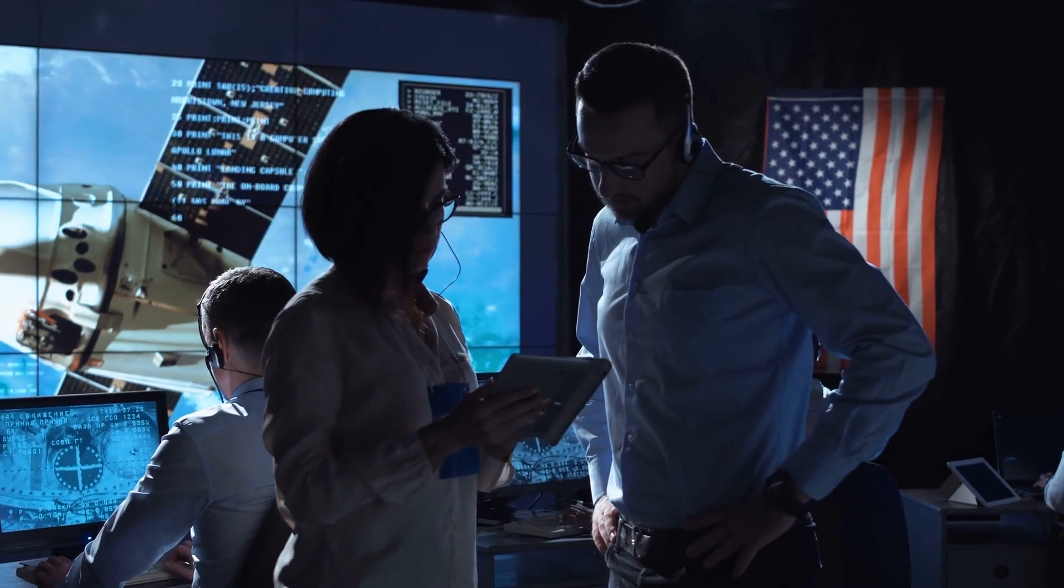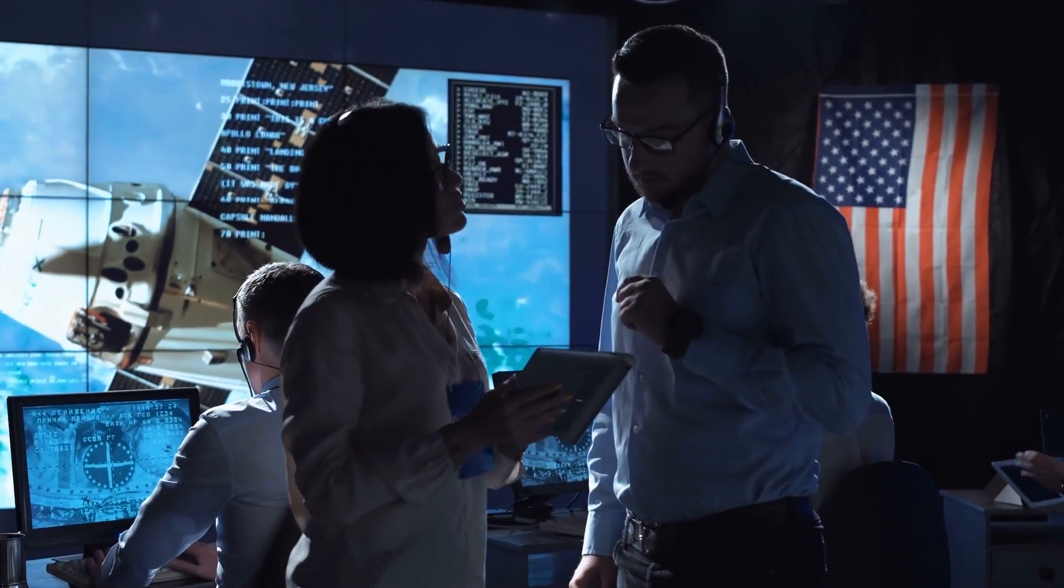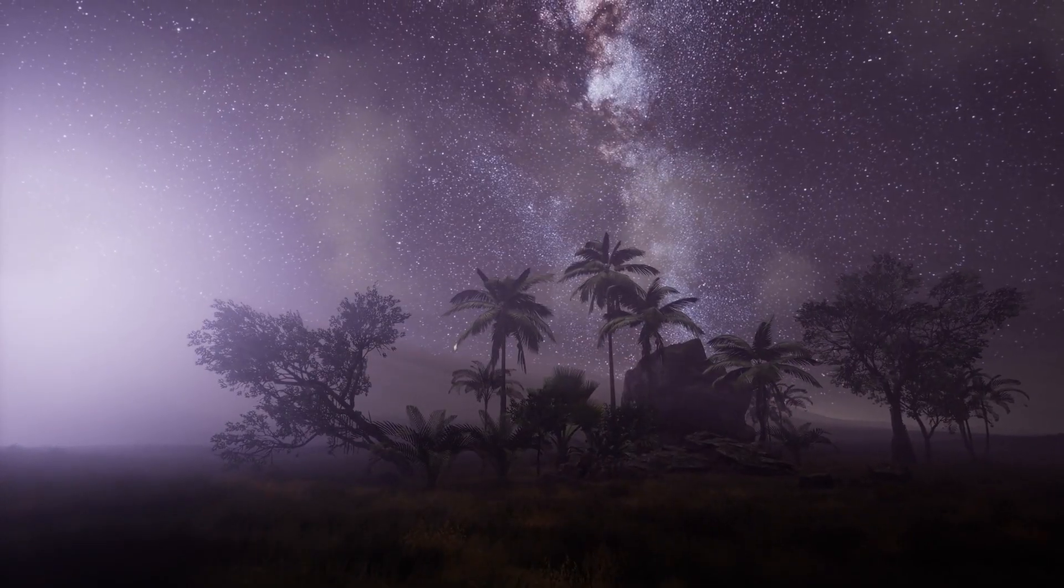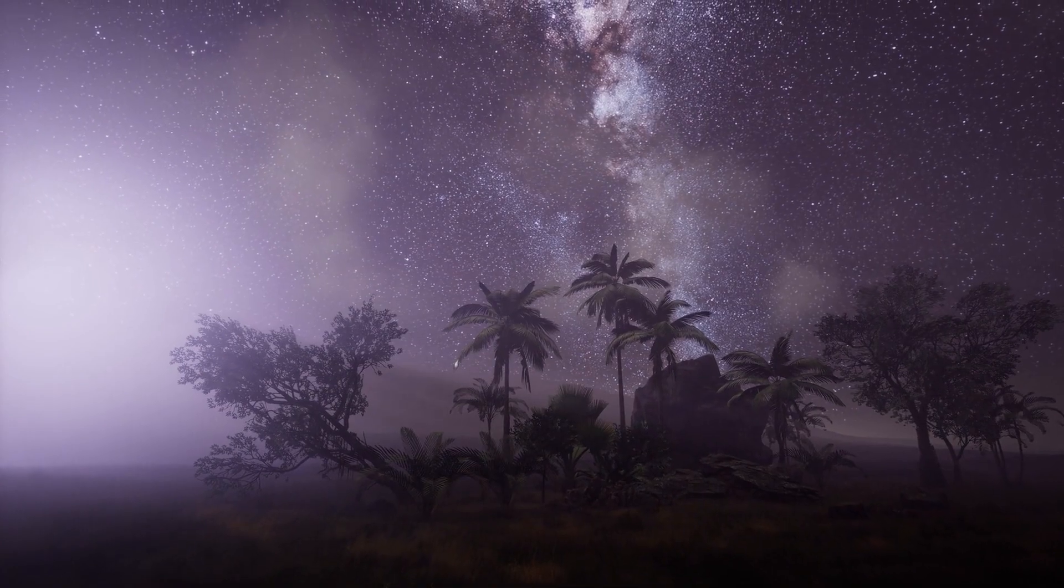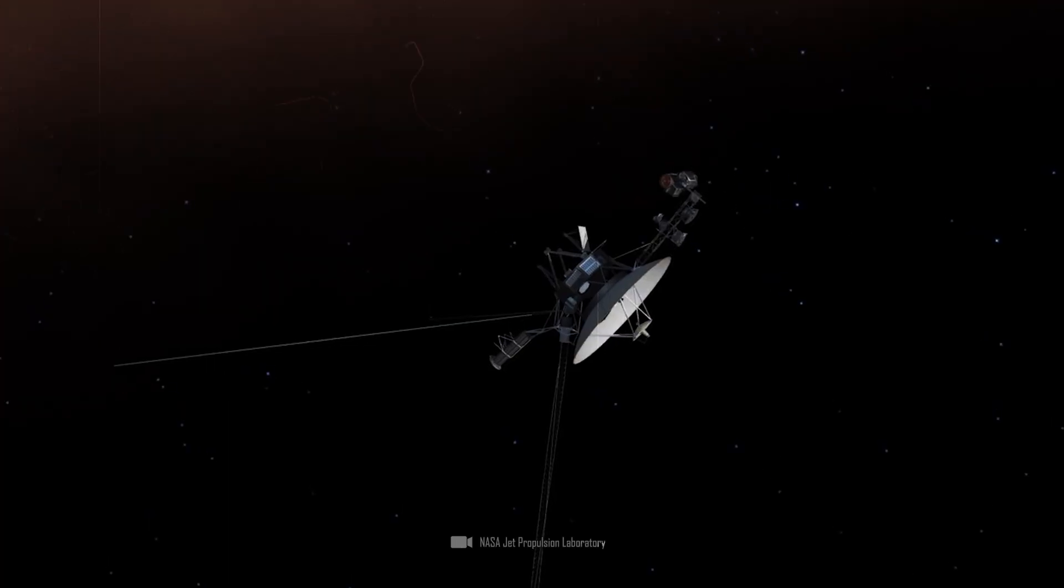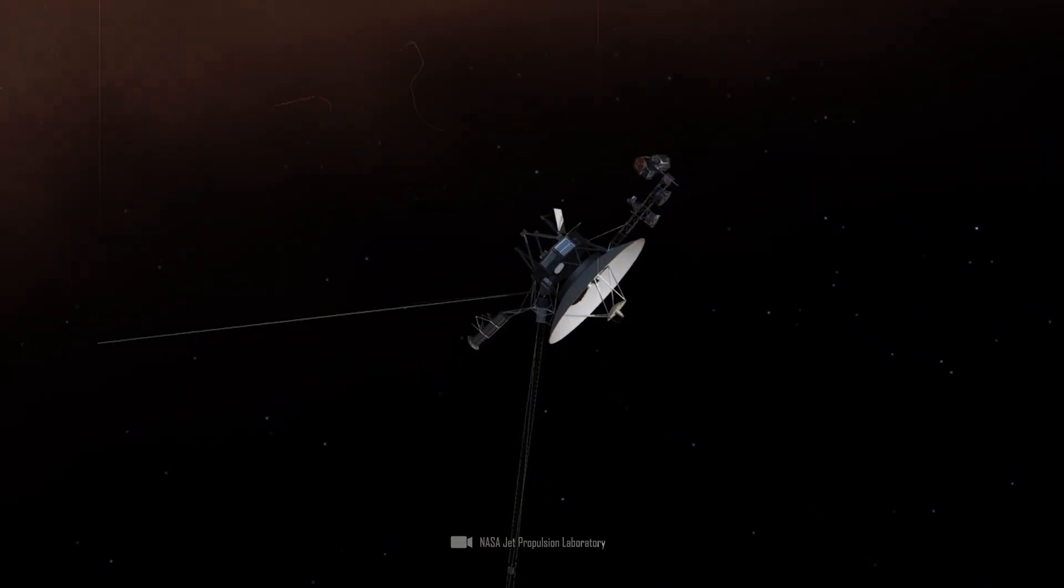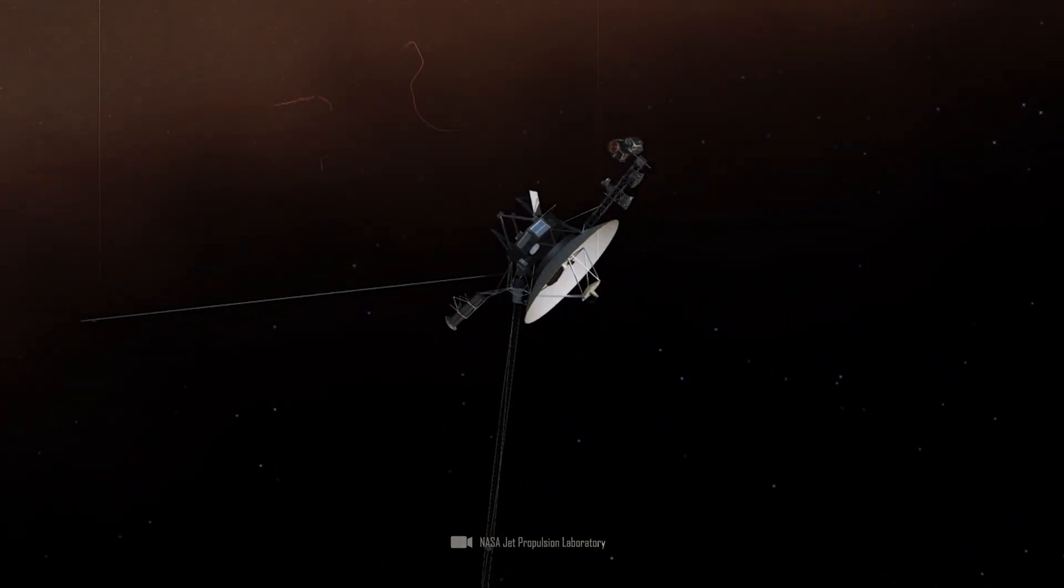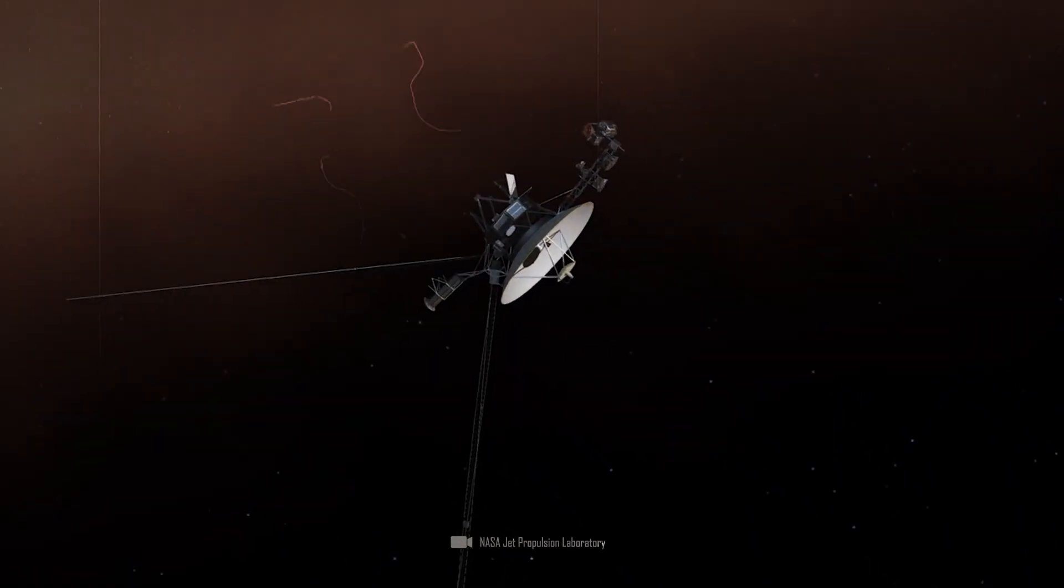Where will they go next and what surprises did researchers experience when the most successful probes of all time left the solar system? Shock at the edge of the solar system—it was really a shock when Voyager 1 was the first of the two probes to cross the final frontier of the solar system.